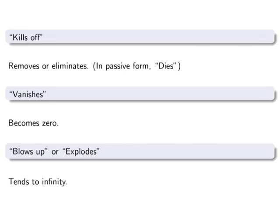Kills off, removes or eliminates. If A kills off B, then we might say that B dies. Vanishes, becomes zero. Whereas kills off can refer to most mathematical objects, vanishes is used almost exclusively with numbers.